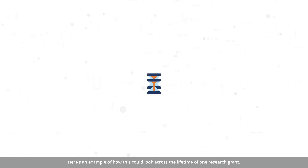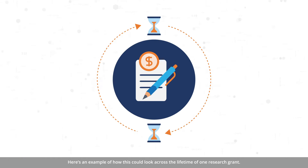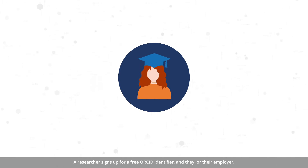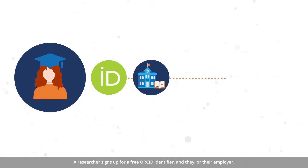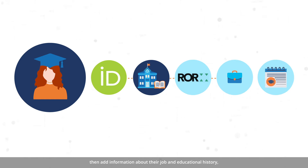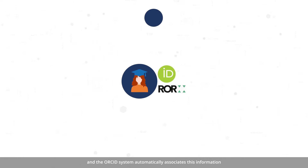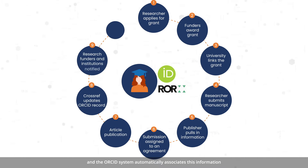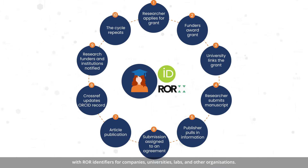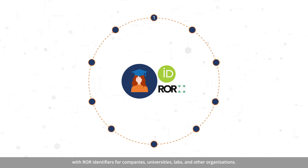Here's an example of how this could look across the lifetime of one research grant. A researcher signs up for a free ORCID identifier, and they or their employer then add information about their job and educational history. The ORCID system automatically associates this information with ROR identifiers for companies, universities, labs, and other organizations.